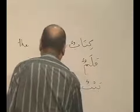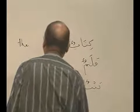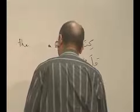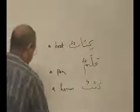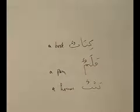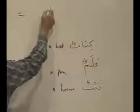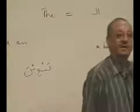For example, 'a house' — tanwin will tell us that the noun is indefinite. And then, how do I make it definite? To make it definite, which is 'the' in English, we have to add 'al' to the noun.